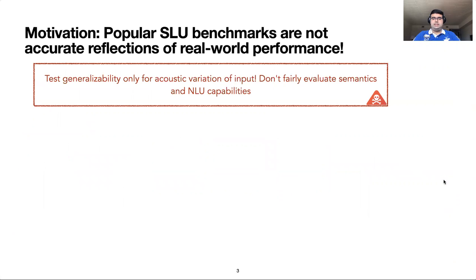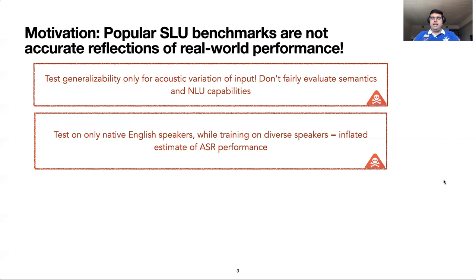However, the current benchmarks for such decomposable tasks only test generalizability for input variations. For example, the FSA dataset, which is the standard benchmark for spoken language understanding, tests generalization to new speakers but not generalization to new utterances. Moreover, it only tests on native English speakers and does not assess model generalizability on diverse speaker demographics. All these factors can lead to a poor estimate of model performance in real-world scenarios.